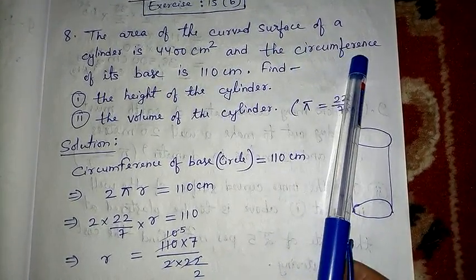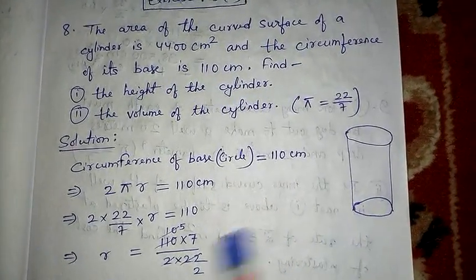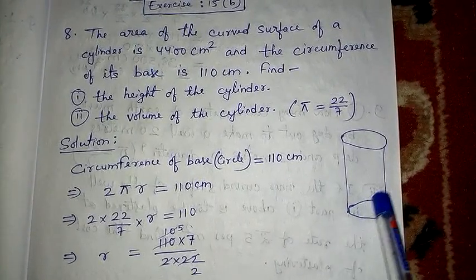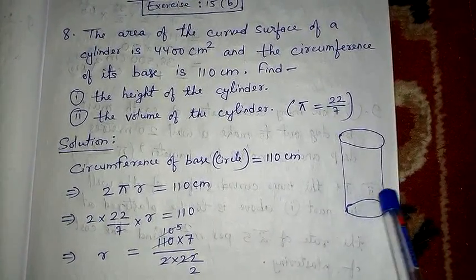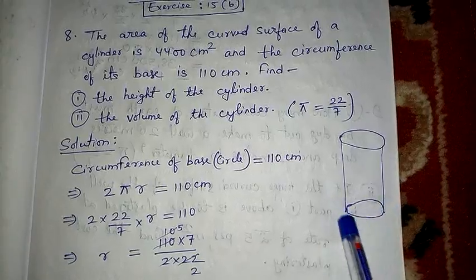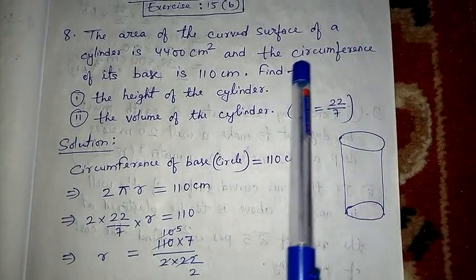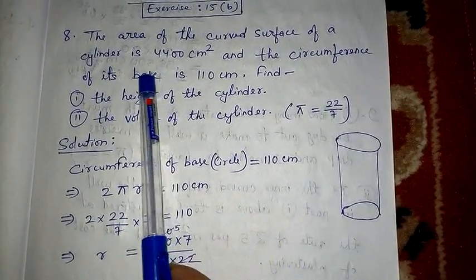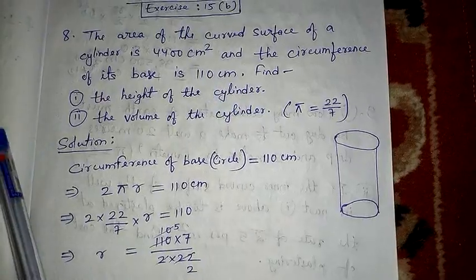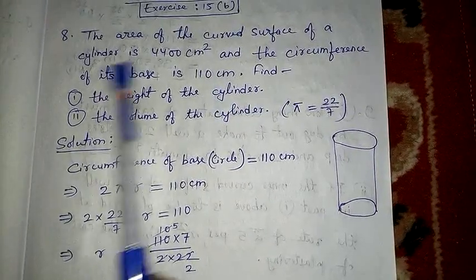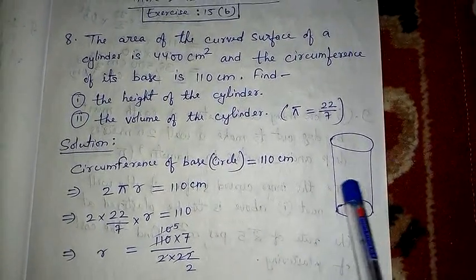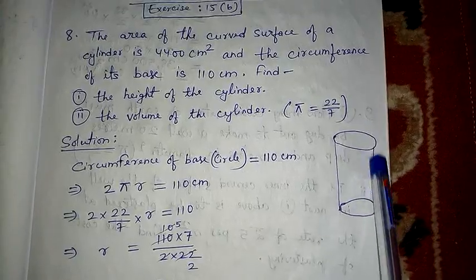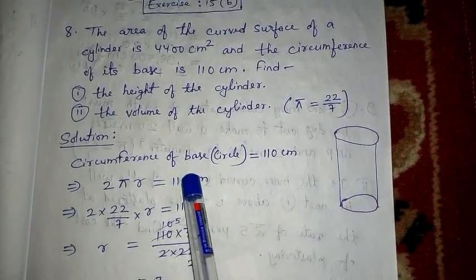Circumference means perimeter. When you check the base of this particular cylinder, you can see the base is a circle. That means circumference of base means circumference of circle, which is 110 centimeter. Now find the height of the cylinder — height has not been given — and we have to find the volume of the cylinder.